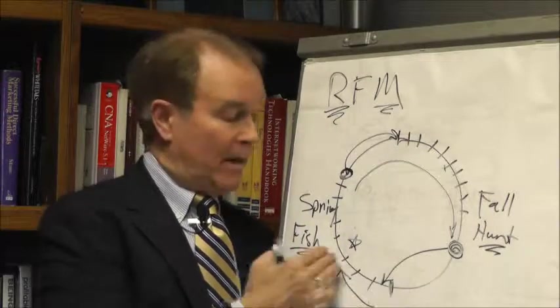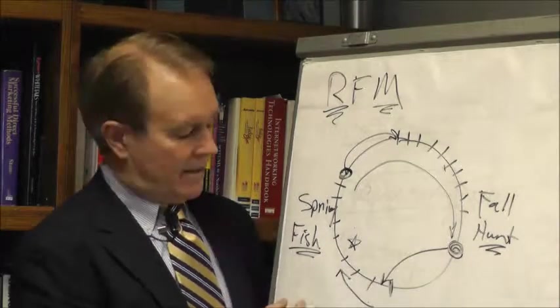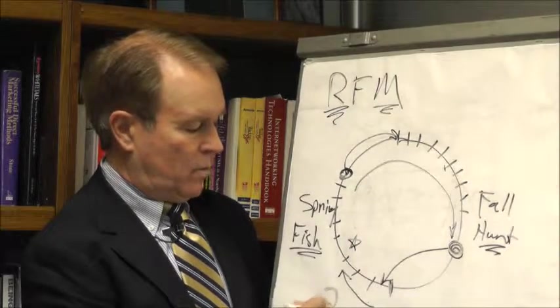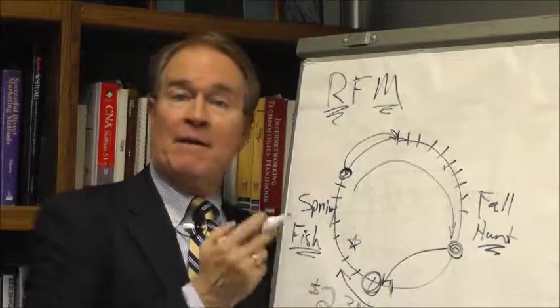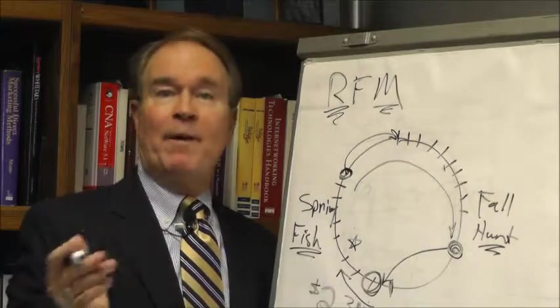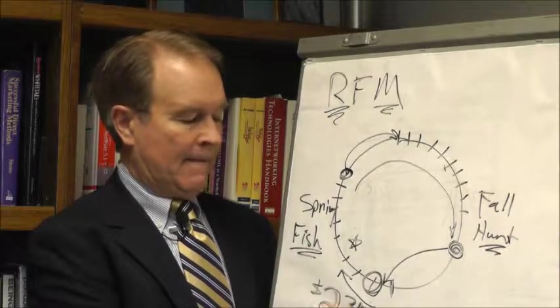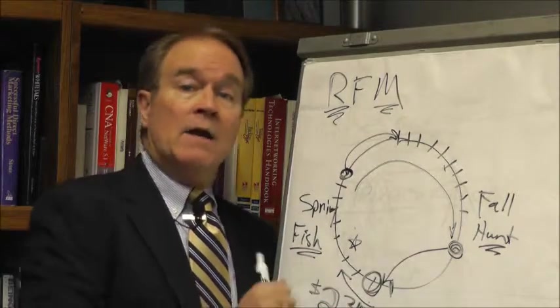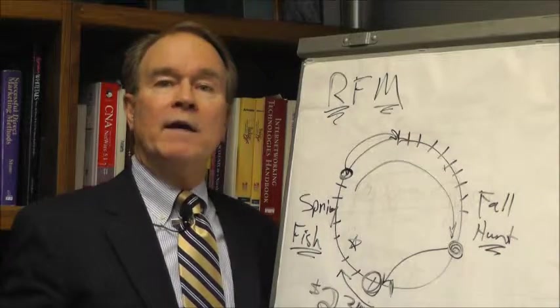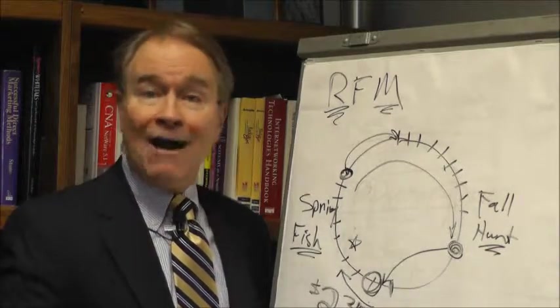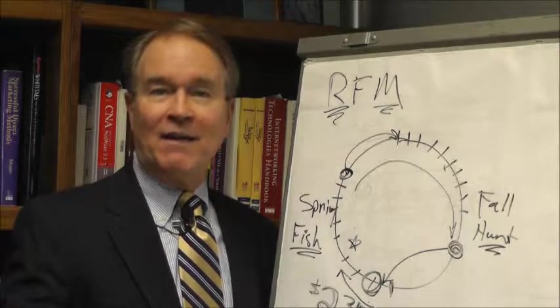By not using recency but by using their fishing pattern as fishermen would say, we were able to generate—they told us—2.3 million dollars more profit on this mailing than they would have. They compared their projections to what we actually generated and said 2.3 million, which is real money to most companies. The point is that RFM can cause trouble depending on how you look at it. You've got to look at it in a lot of different ways. We're going to get more and more into how to look at it.